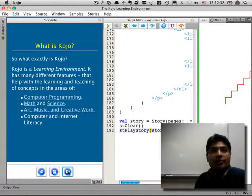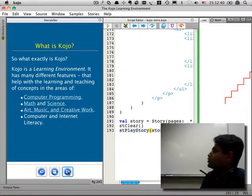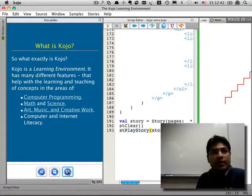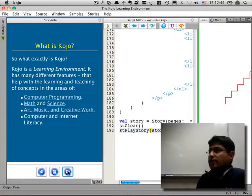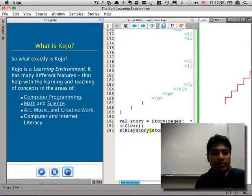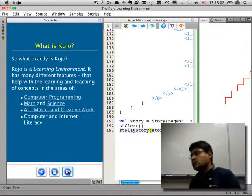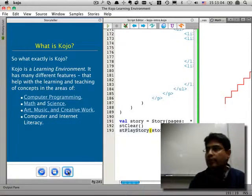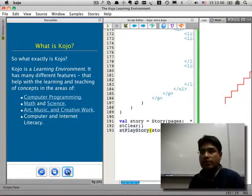I'm going to start with a description of exactly what Kojo is. Essentially, Kojo is a learning environment for kids to learn things in a variety of different areas. Some of these areas are computer programming, mathematics and science, art, music, other kinds of creative work, and of course as kids work with Kojo they also hopefully get better at using computers and using the internet.